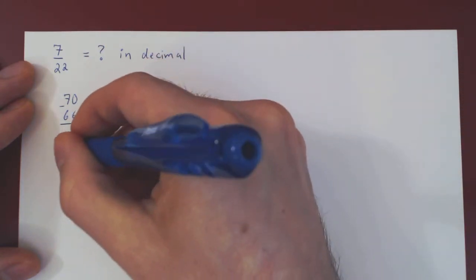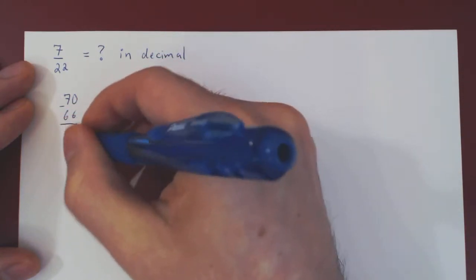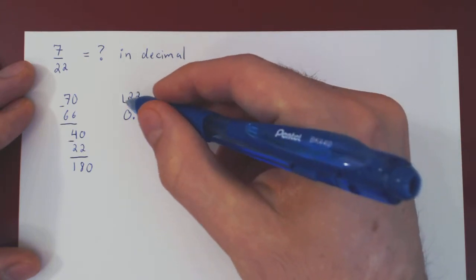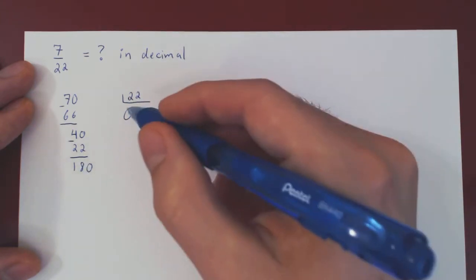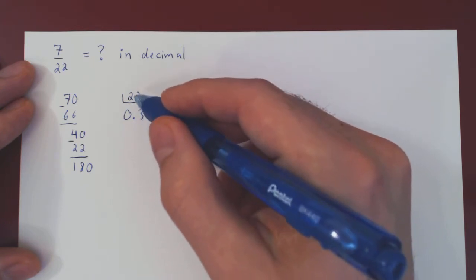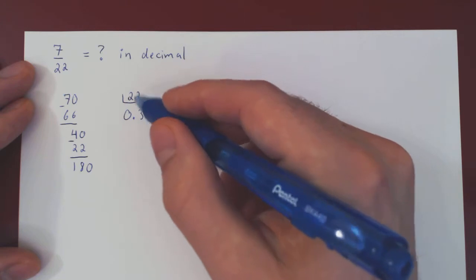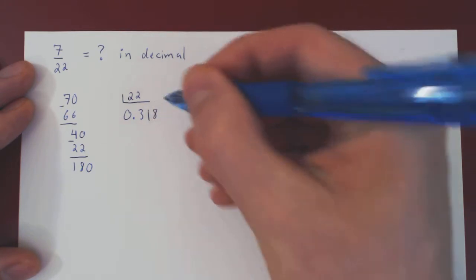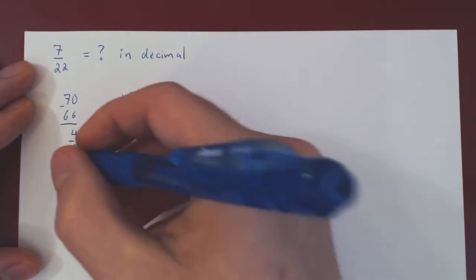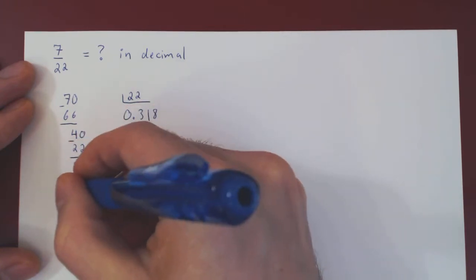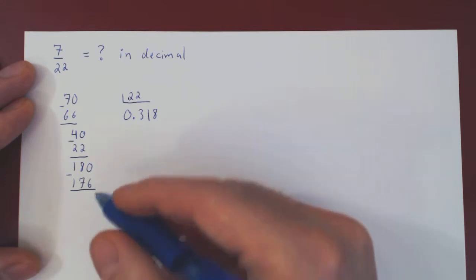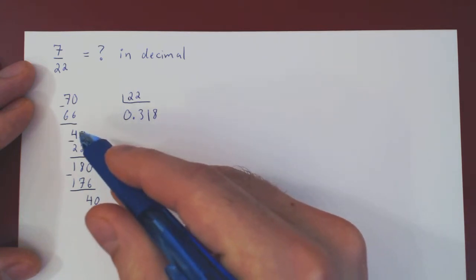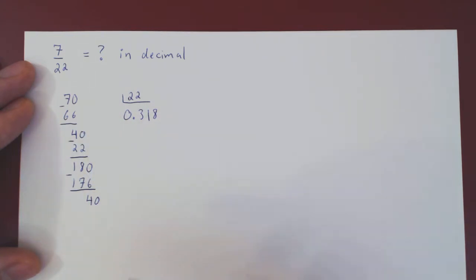3 times 22 is 66. We subtract, we get 4. Times 10, we get 40. How many times can we fit 22 into 40? Only once. 1 times 22 is 22. We subtract: 40 minus 22 is 18. Times 10 — how many times can we fit 22 into 180? 8 times 22 is 176. This is clearly as high as we can go. 180 minus 176 is 4. Times 10 is 40. And now we see that we will loop forever between 40 and 180.